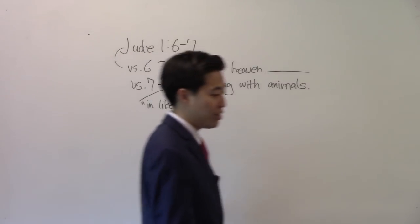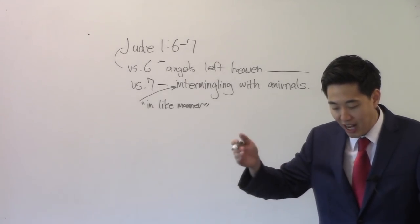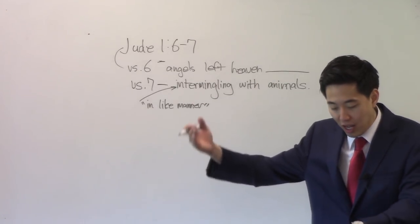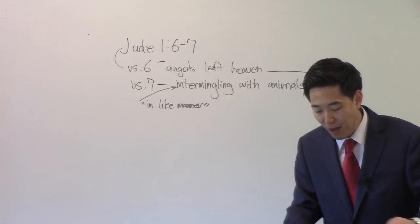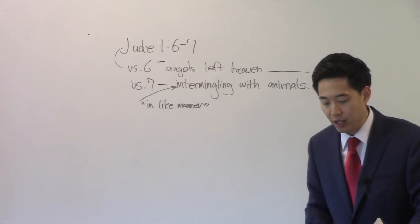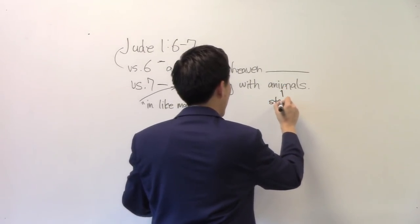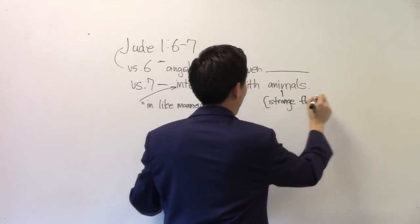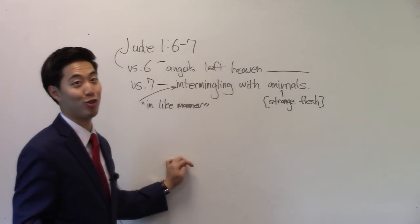What? Intermingled with animals. In verse 7, in like manner, Sodom and Gomorrah and the cities about them giving themselves over to fornication and going after strange flesh. There's your answer right there. Strange flesh. That proves they intermingled with animals.